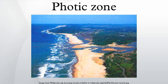Since the photic zone is where almost all of the photosynthesis occurs, the depth of the photic zone is generally proportional to the level of primary production that occurs in that area of the ocean. About 90% of all marine life lives in the photic zone. A small amount of primary production is generated deep in the abyssal zone around the hydrothermal vents which exist along some mid-oceanic ridges.